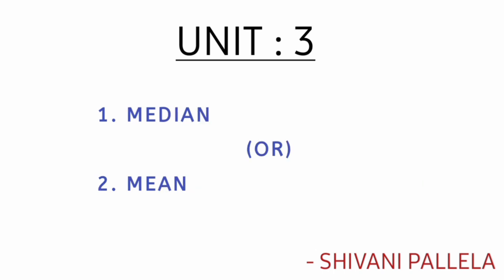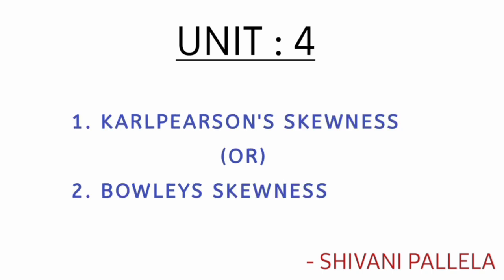In unit number three, for 12 marks, they may ask either mean or median — prepare both. In unit number four, for 12 marks, they may ask Karl Pearson's skewness or Bowley's skewness; sometimes they will ask both.